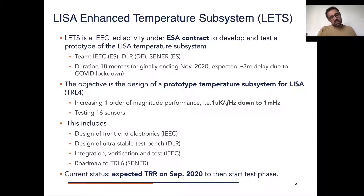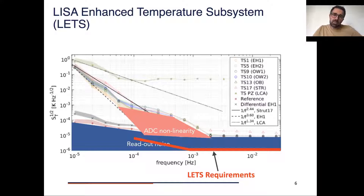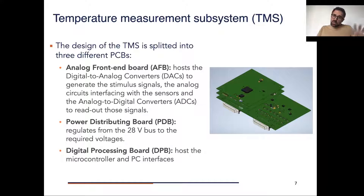The current status is that we are waiting for the test readiness review in September to then start the testing phase. Comparing to LISA Pathfinder, the idea is basically that we will go one order of magnitude better in performance down to one millihertz, with a small relaxation on frequencies below the millihertz.